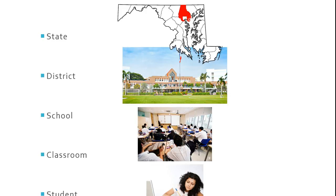In other words, data can come at different levels — at the bottom, we have data at the student level, all the way up to data at the state level. We could even go beyond what's shown on the screen and think about national or international level estimates of student achievement.